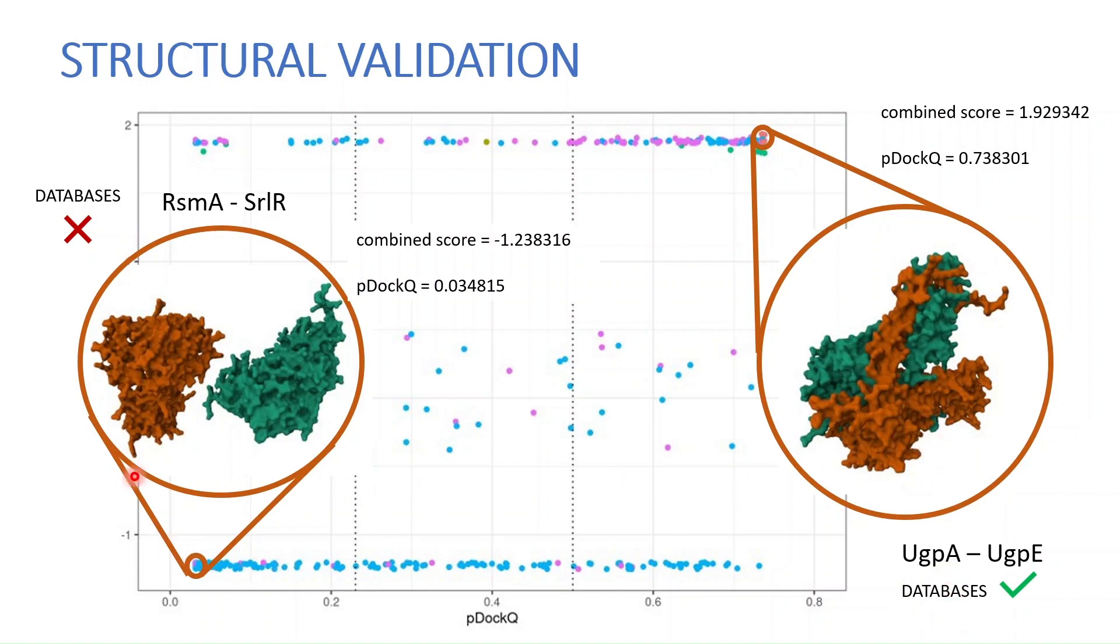Whereas when we took one of the lowest scoring interactions here with a combined score of minus 1.2, AlphaFold Multimer was unable to find any suitable interface between these two structures and also this wasn't present in any database whatsoever, so this further corroborates our prediction and our ranking system.